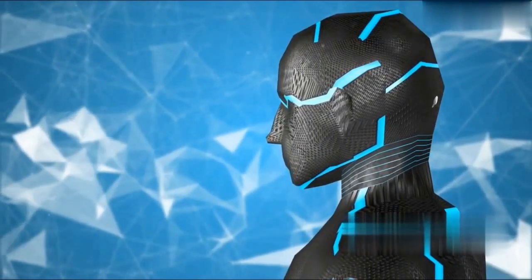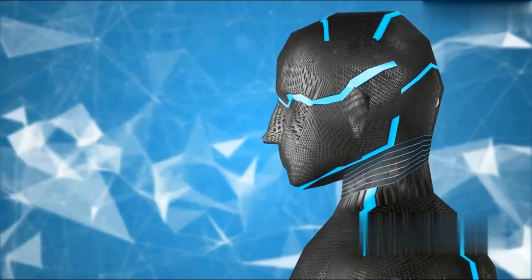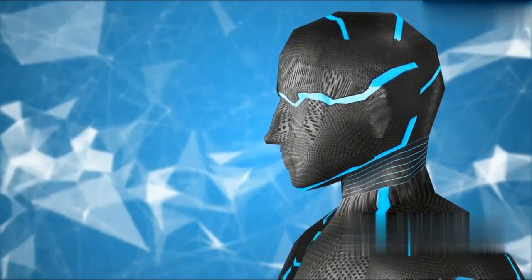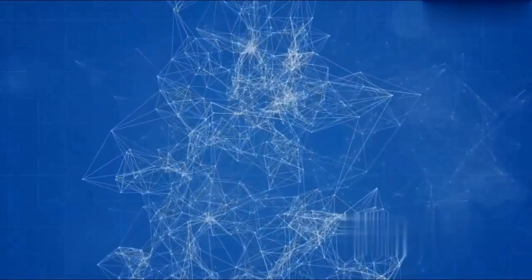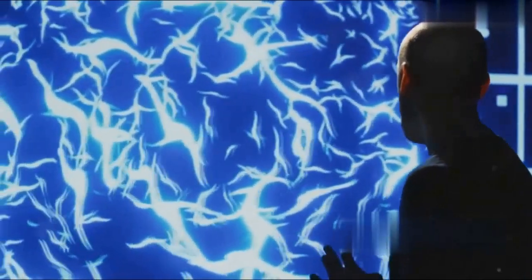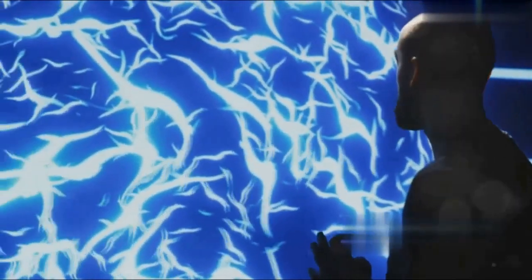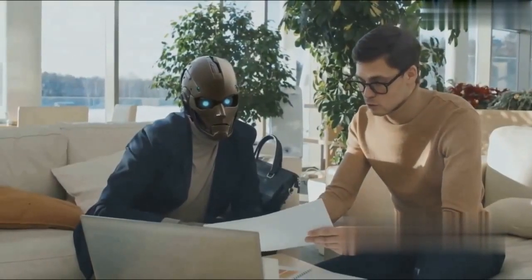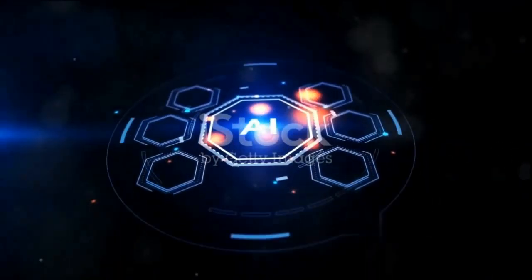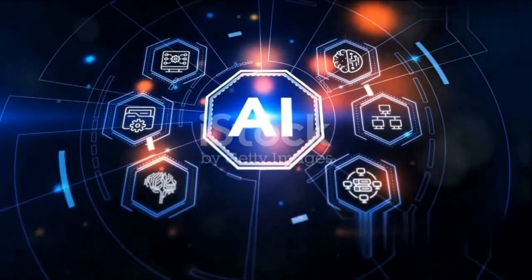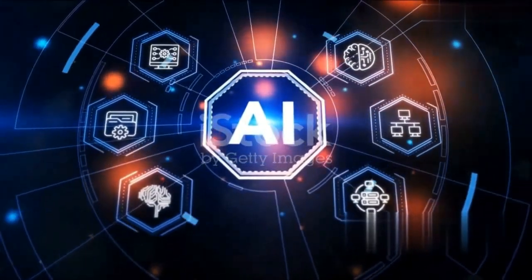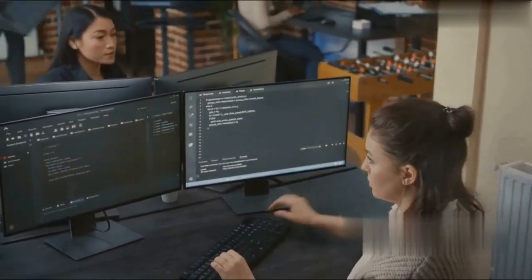In essence, while Sora's capabilities are groundbreaking, it's important to remember that it's still an AI model, not a human creator. For instance, it might depict a person running backward on a treadmill, which is physically implausible. For example, senior AI researcher Sam Altman recently shared several examples of Sora's capabilities on Twitter. In a series of tweets, Altman showcased the model's knack for generating imaginative scenes with a stunning degree of realism. From conjuring up wizards casting intricate spells to creating sprawling futuristic cityscapes, Sora certainly left an indelible mark on the minds of those who witnessed its prowess.